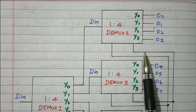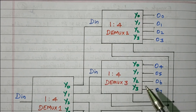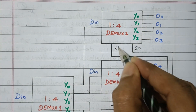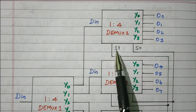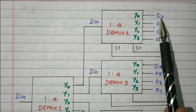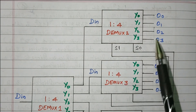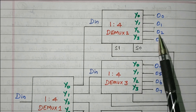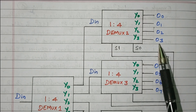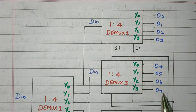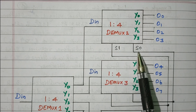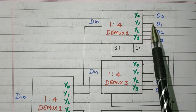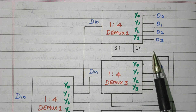Within DMUX2, there are two selection lines S0 and S1, connected to all the demultiplexers. When S1S0 is 00, data D0 will be enabled; 01 means D1 will be enabled; 10 means D2 will be enabled; 11 means D3 will be enabled. All remaining outputs are 0. So when S3S2 is 00, DMUX2 is enabled, and based on S1 and S0, any one of D0 to D3 is selected.